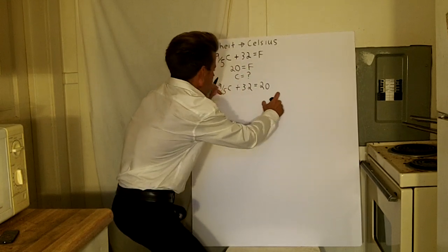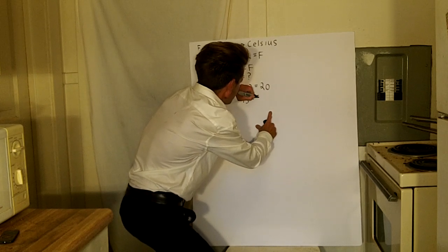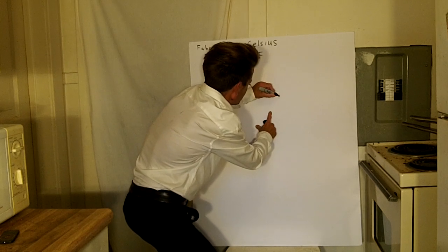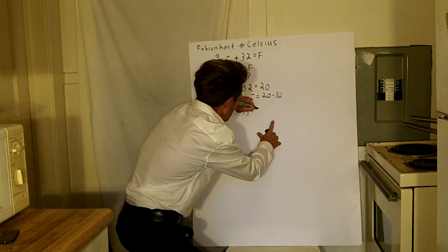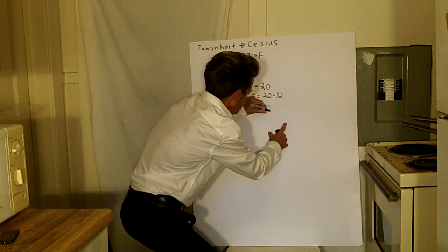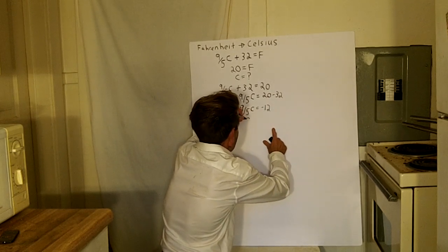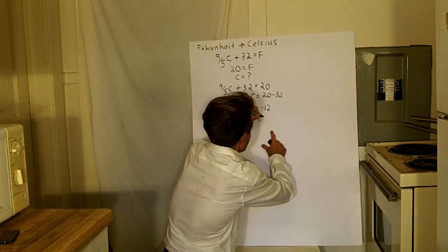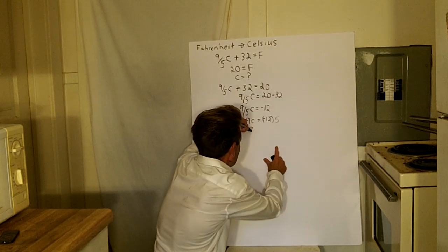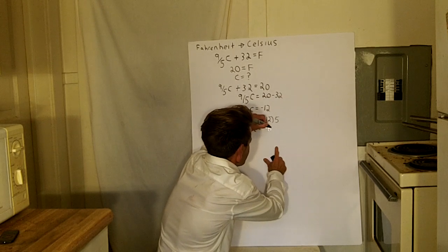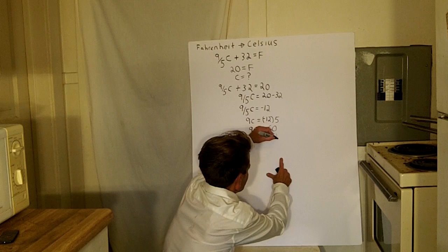So that gives us 9 fifths of C equals 20 minus 32, which means 9 fifths of C equals negative 12. Now when you bring the fraction over, you multiply the 5 by the 12 to get 9C equals negative 12 times 5, or negative 60. So 9C equals negative 60, and when you bring the 9 underneath, C equals negative 60 divided by 9.